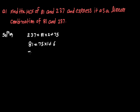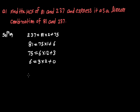In the third step we divide 75 by 6; the quotient is 12 and the remainder is 3. In the final step we divide 6 by 3; the quotient is 2 and the remainder is 0. The step at which the remainder becomes 0 — the divisor at that stage is the HCF. So the HCF of 81 and 237 is 3.